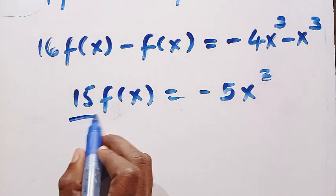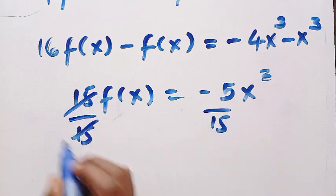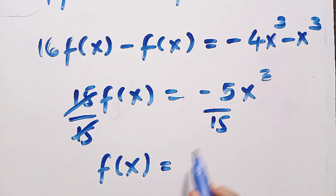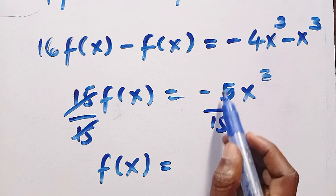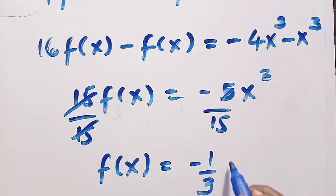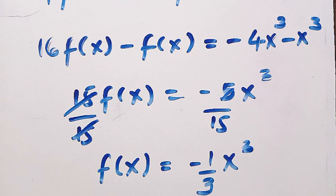Dividing both sides by 15: f(x) = -5x³/15 = -x³/3. This confirms the answer. So f(x) = -x³/3. Thanks for watching, see you in the next video — never stop learning, bye bye.